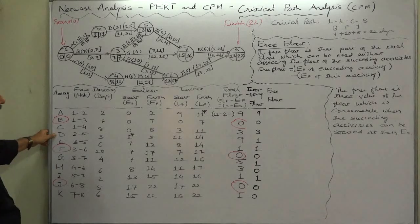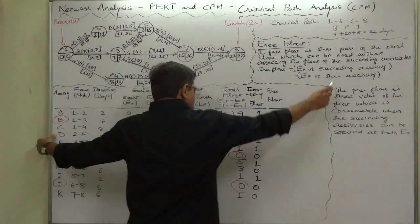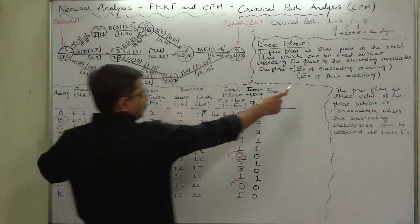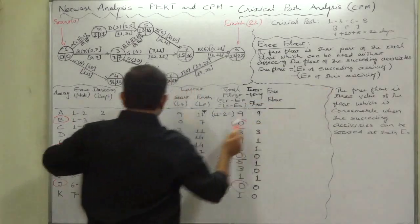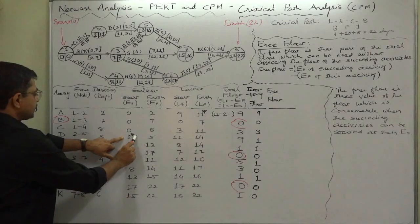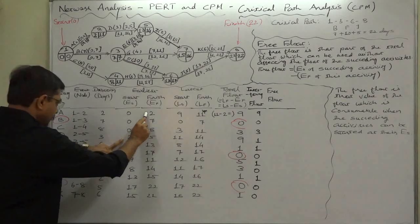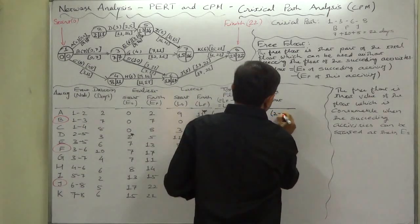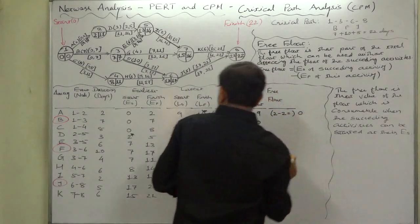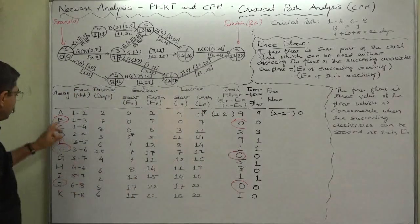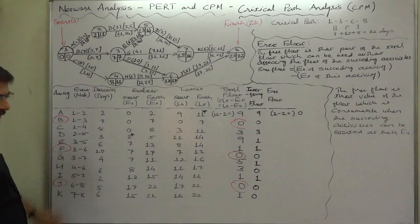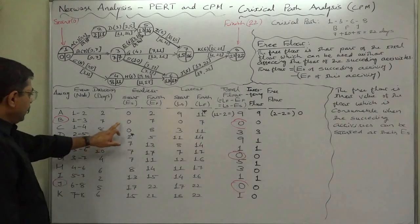Let's calculate it for activity A. Its succeeding activity is D, so earliest start time of D comes to 2 and earliest finish time of A comes to 2. So 2 minus 2 equals 0. In case of B, even if you don't write the floats for critical activities, it is always allowed.